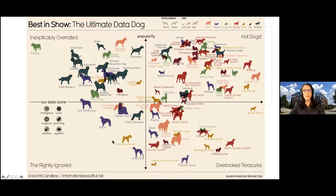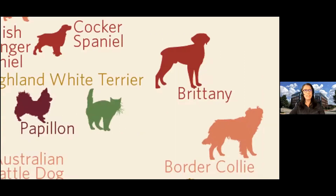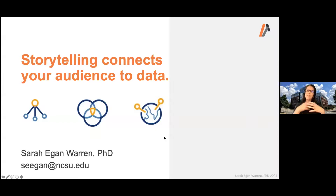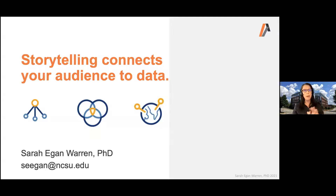To wrap up: use these three storytelling techniques to connect your audience to your data. Start with your bottom line up front, combine the use of ethos, logos, and pathos, and use a message map — whichever format works for you — to structure and support your story and make your message clear to your audience. Thank you so much for listening, and I'm happy to answer any questions.